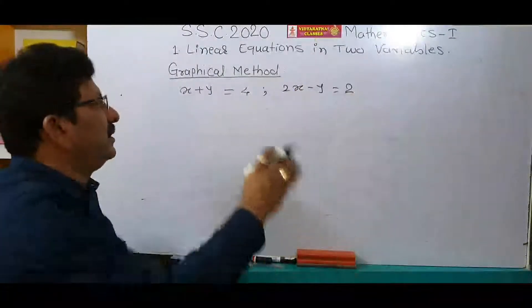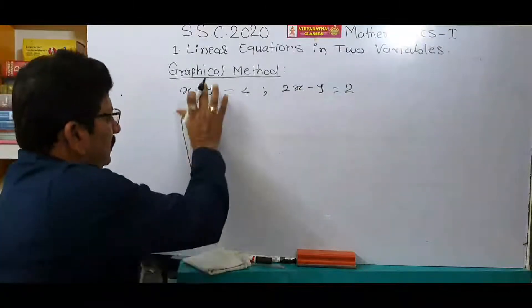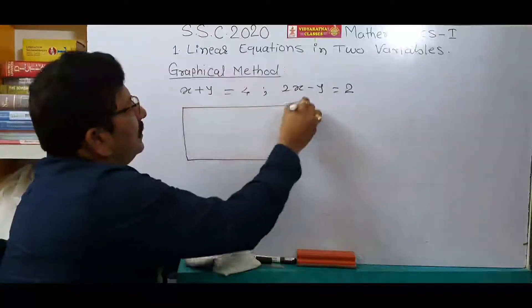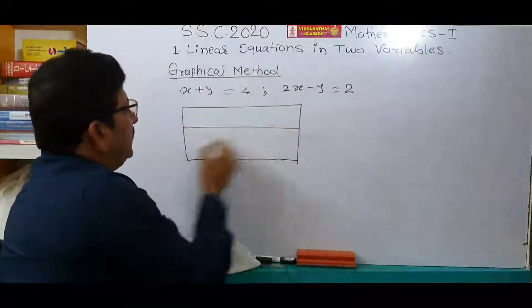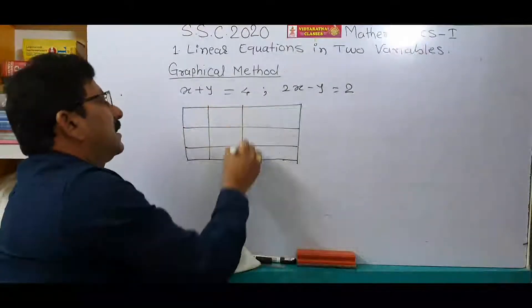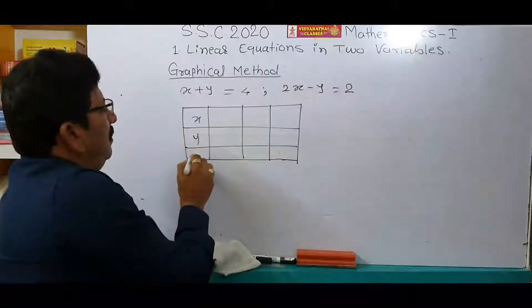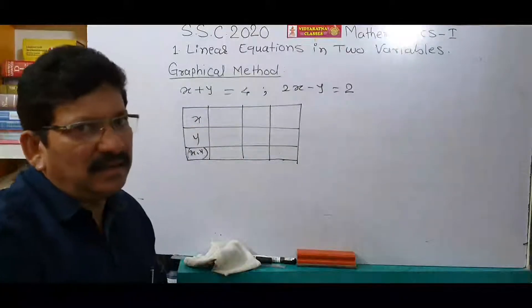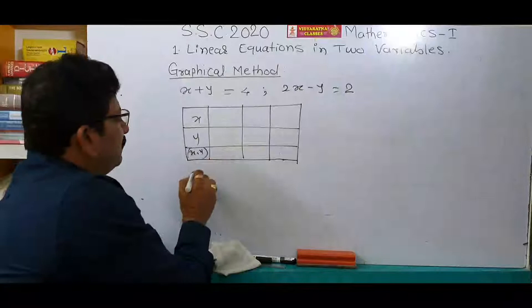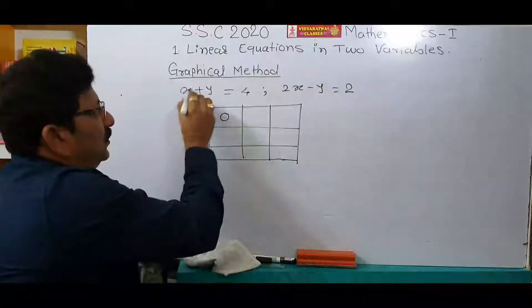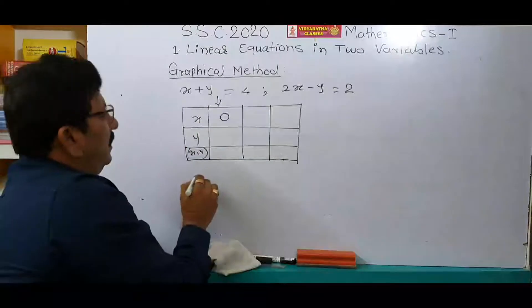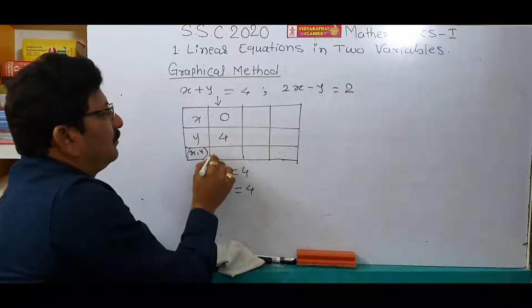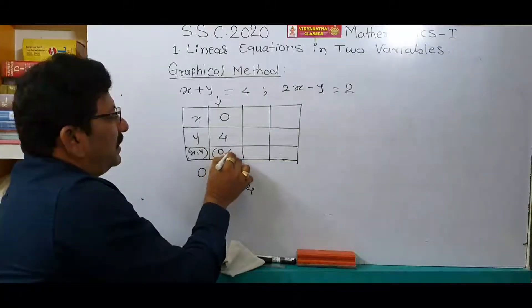See how to find out the 4 ordered pairs of solutions of this equation — it is very easy. Consider 0 in place of x and in place of y. First of all, consider x is equal to 0. Put it in the equation: 0 plus y is equal to 4. Therefore, y is equal to 4. Write here 4. Your first ordered pair is (0, 4).